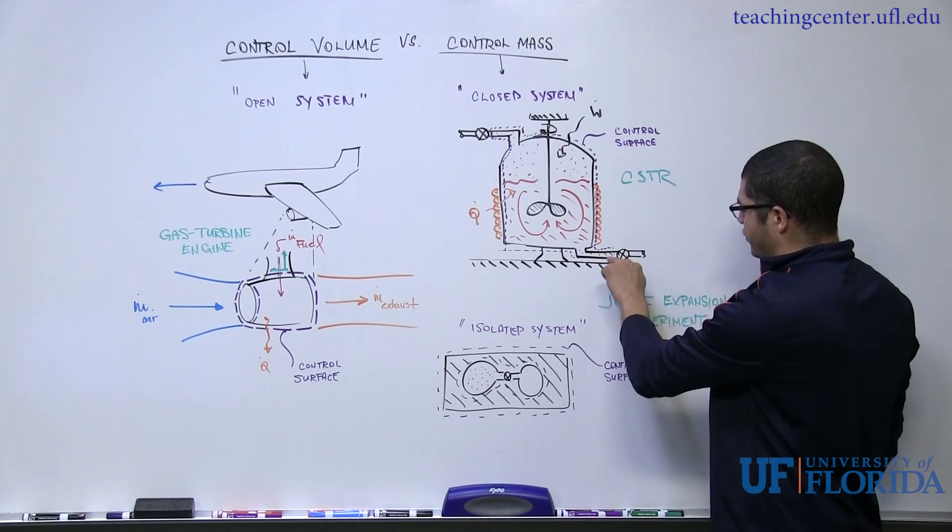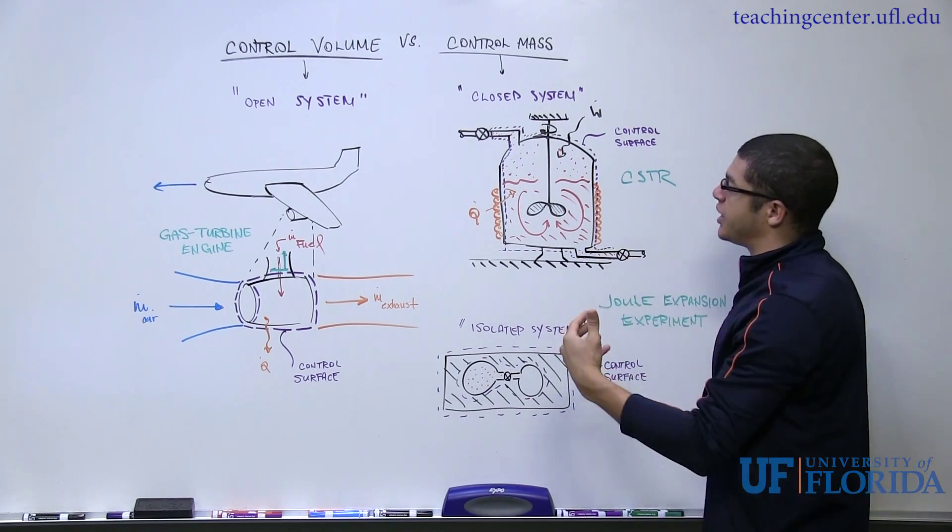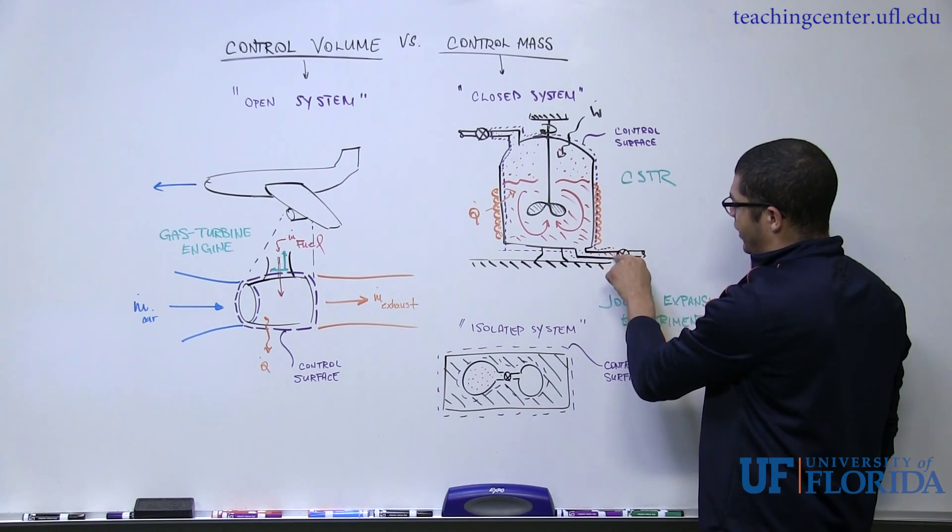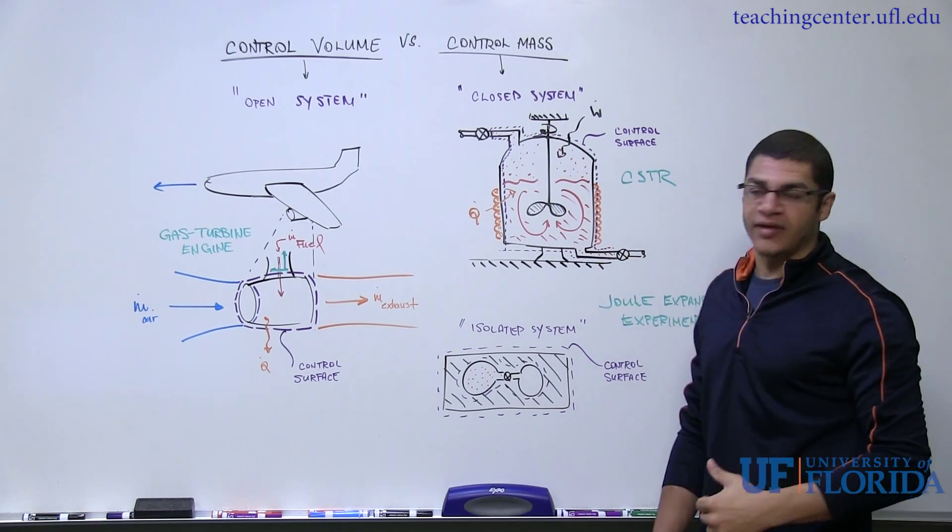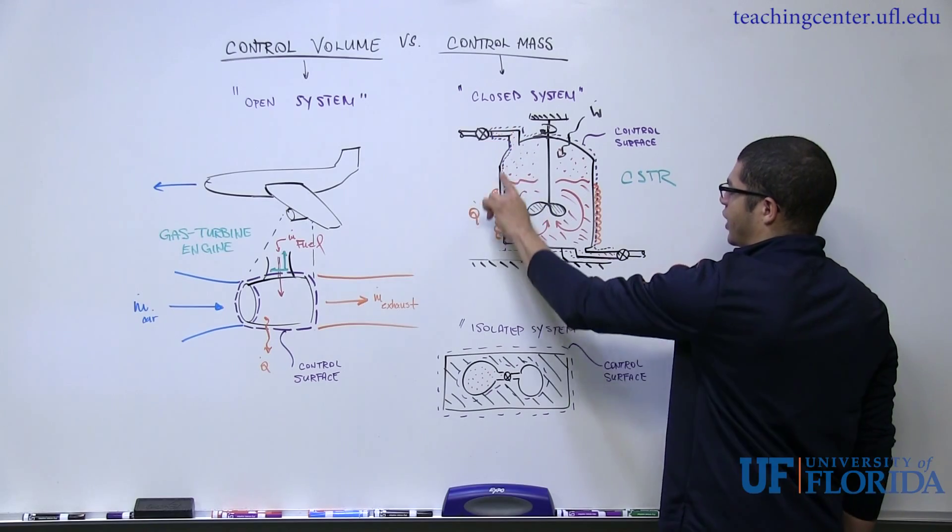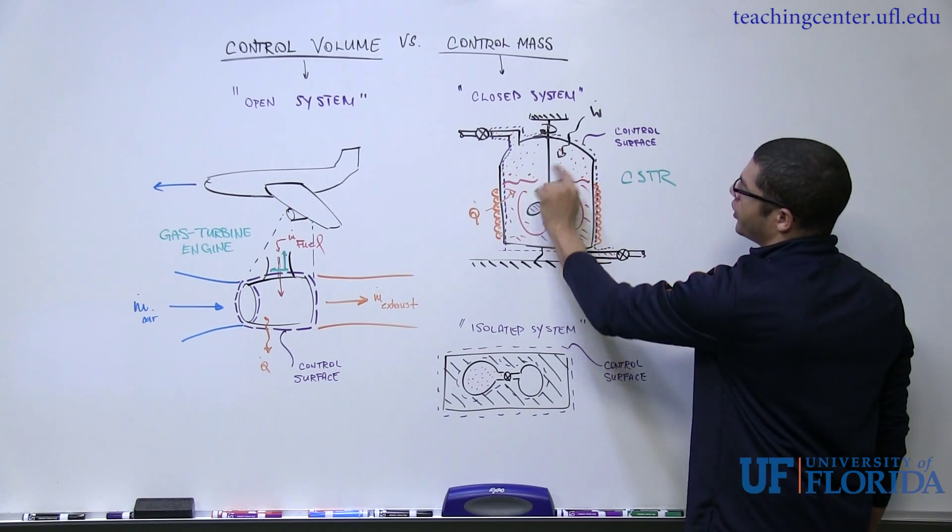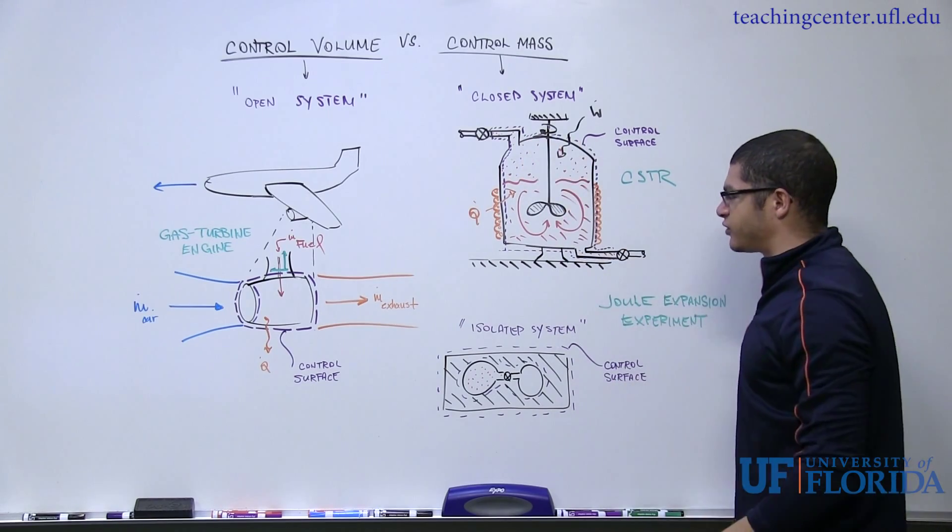I didn't mention it previously, but in purple here, I've drawn a control surface, which essentially crosses through the pipes right before or at the valves, so the outlet valve and the inlet valve, and then surrounds the tank. It crosses through this heating element as well, and then also crosses through the shaft that goes into the system.